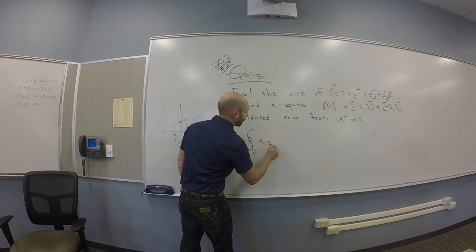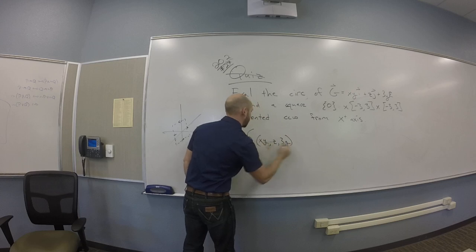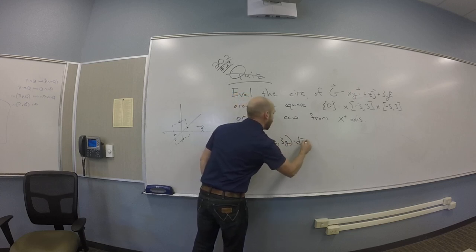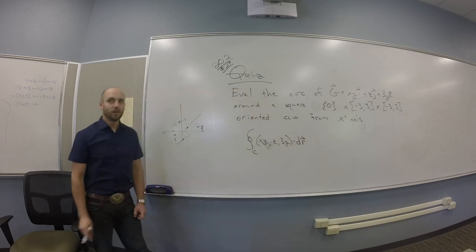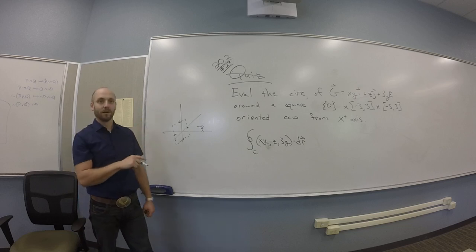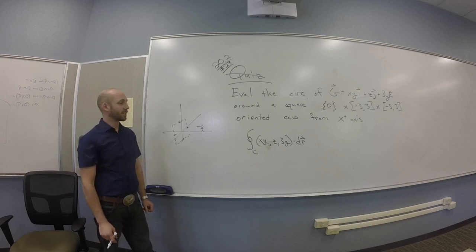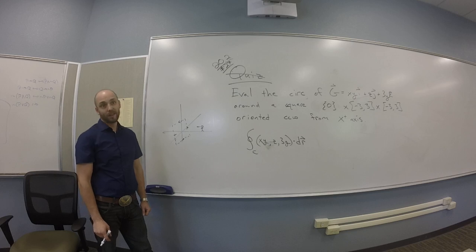So xy, comma z, comma 3y, dr, right? And so you could parametrize each of the four line segments here, right, and calculate that way, or you could check the assumptions of Stokes and try that.